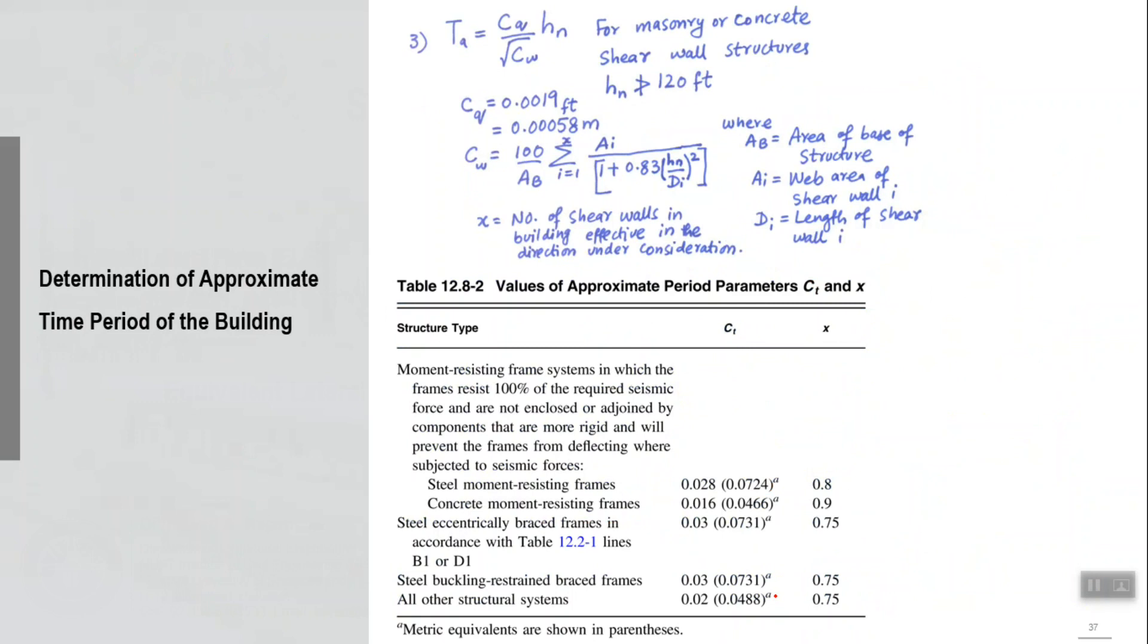The third expression is for masonry or concrete shear wall structures. The properties of those shear walls, the dimensions, length and web area, is used in that expression to calculate Ta.